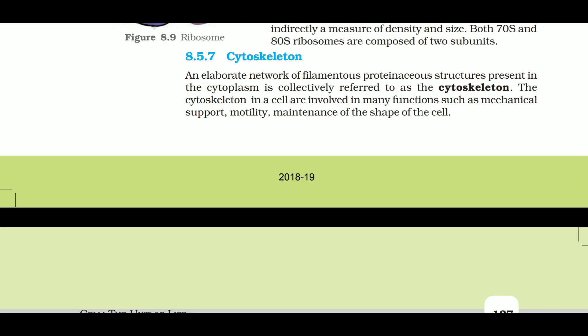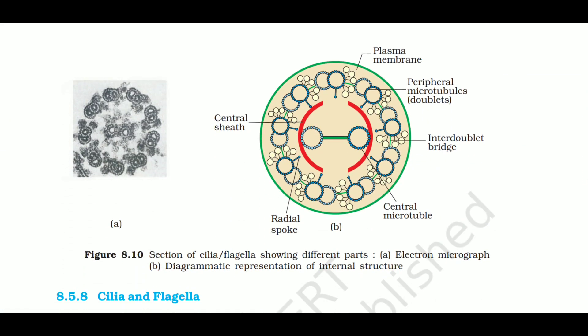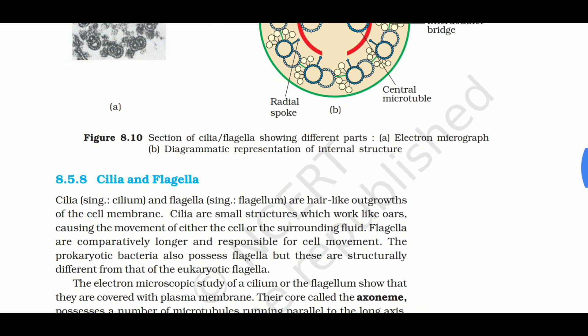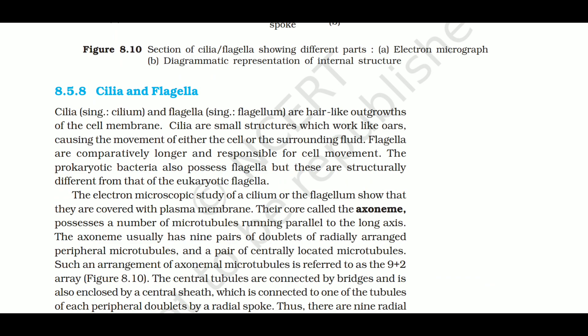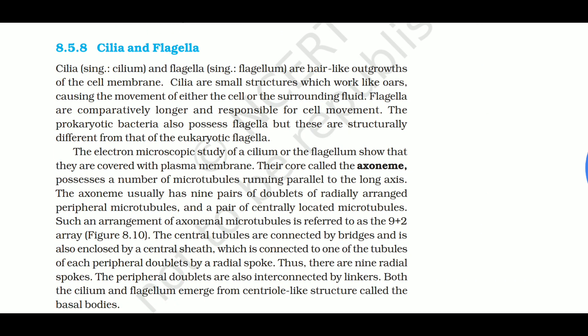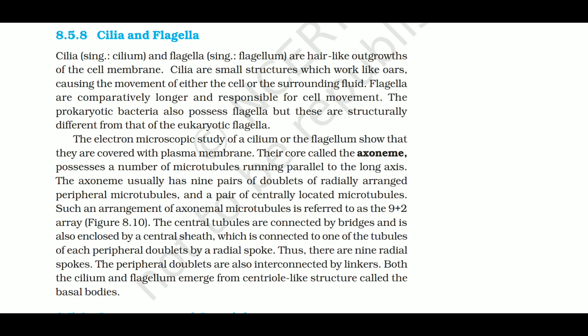Now let us study cilia and flagella. Cilia (singular: cilium) and flagella (singular: flagellum) are hair-like outgrowths of the cell membrane. Cilia are small structures that work like oars, causing the movement of either the cell or surrounding fluid, but not very fast. Flagella cause faster movement and are comparatively longer. The three parts of flagella are: filament, hook, and basal body. Flagella are responsible for cell movement.